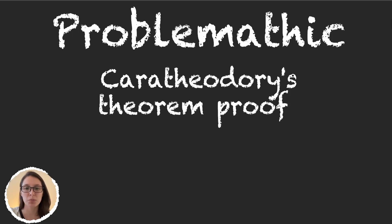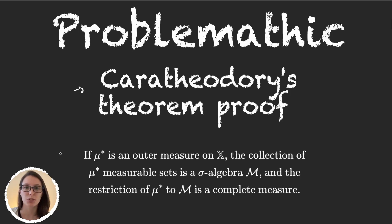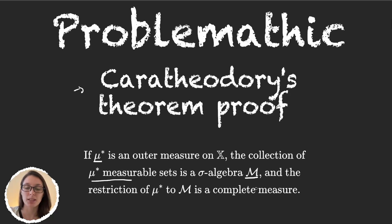In this video we will start the proof for Carathéodory's theorem we saw just a few videos ago. Let's remember what the theorem said. This is Carathéodory's theorem. It says that we have μ*, an outer measure, and whenever we grab the set M formed by all the μ*-measurable sets, then that set M is a sigma-algebra and the restriction of μ* to this sigma-algebra M is a complete measure.